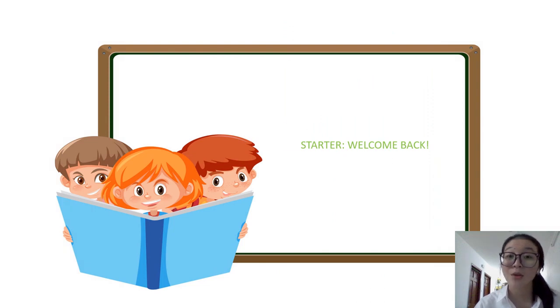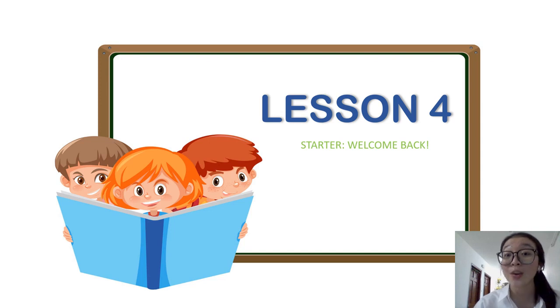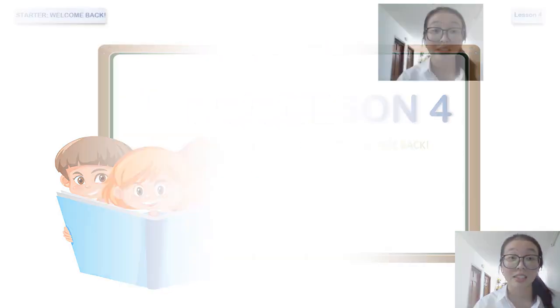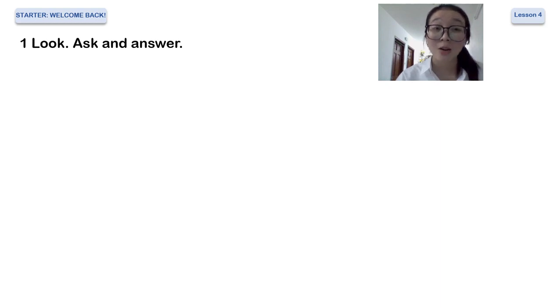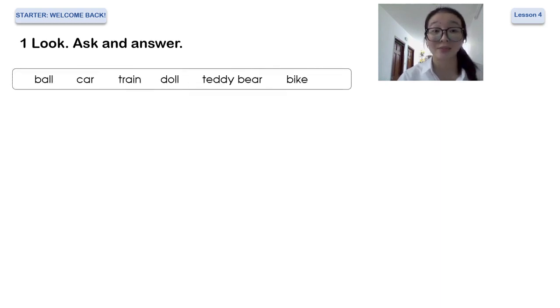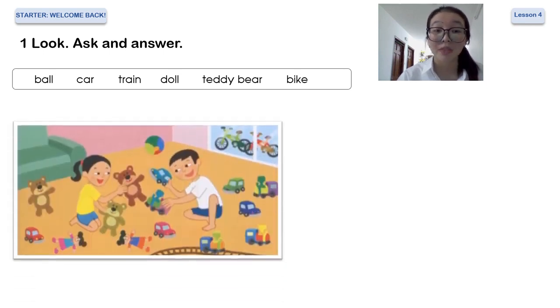Today we'll learn lesson four. If you have a book already, you can open your book page seven. And if you don't have one, you can observe my screen. Task one, look, ask, and answer. Wow, can you see we have some toys and we learned them already when you were in grade 2. Do you remember? Number one, we have ball, car, train, doll, teddy bear, bike. And now look at the picture.